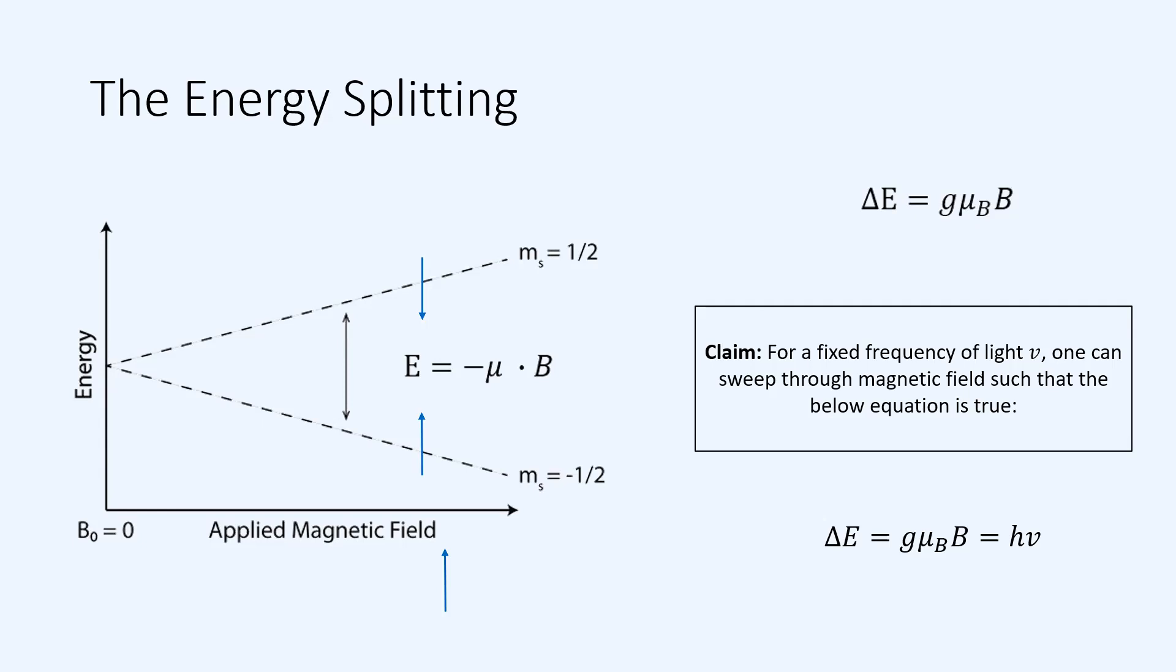And we can see that as the external magnetic field increases, both energies of the electrons increase as well, linearly. Again, a reminder, based on that negative dot product, spin parallel, or the up electron, becomes more stable.